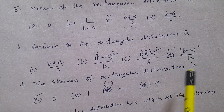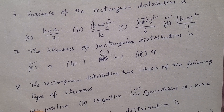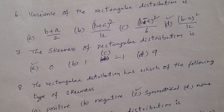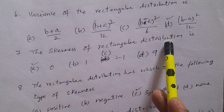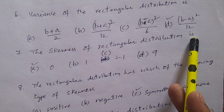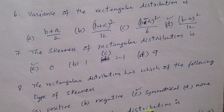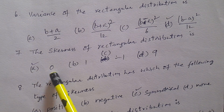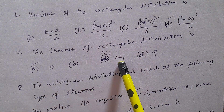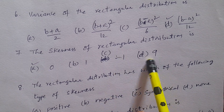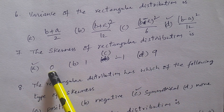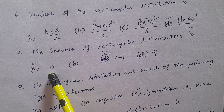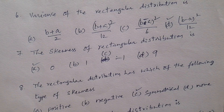Question number 7: The skewness of rectangular distribution — options: A. 0, B. 1, C. -1, D. 9. Answer is option A: 0. The skewness of the rectangular distribution is 0, meaning it is a symmetrical distribution.